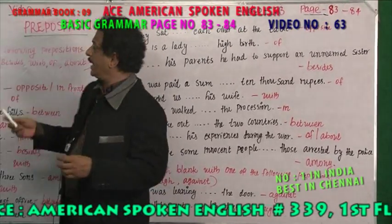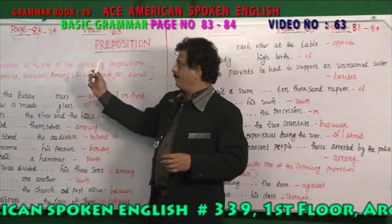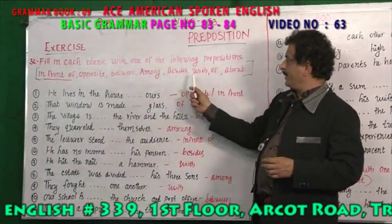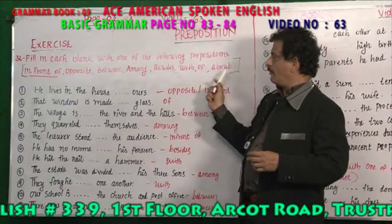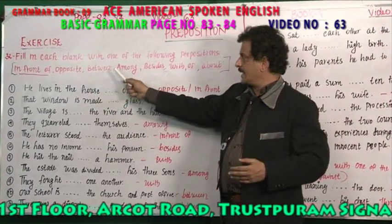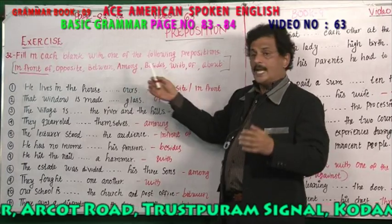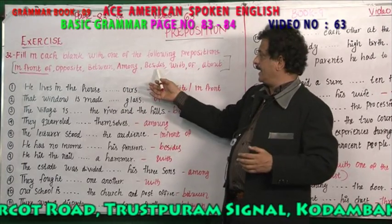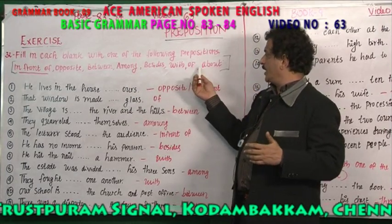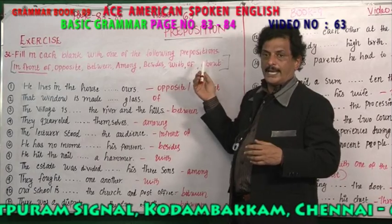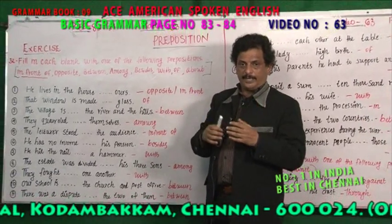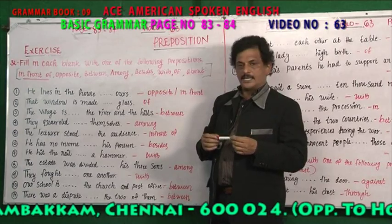So the key prepositions are: in front of, opposite, between, among, besides, with, of, and about. These are the most important prepositions in English grammar. Thank you for joining this English class.